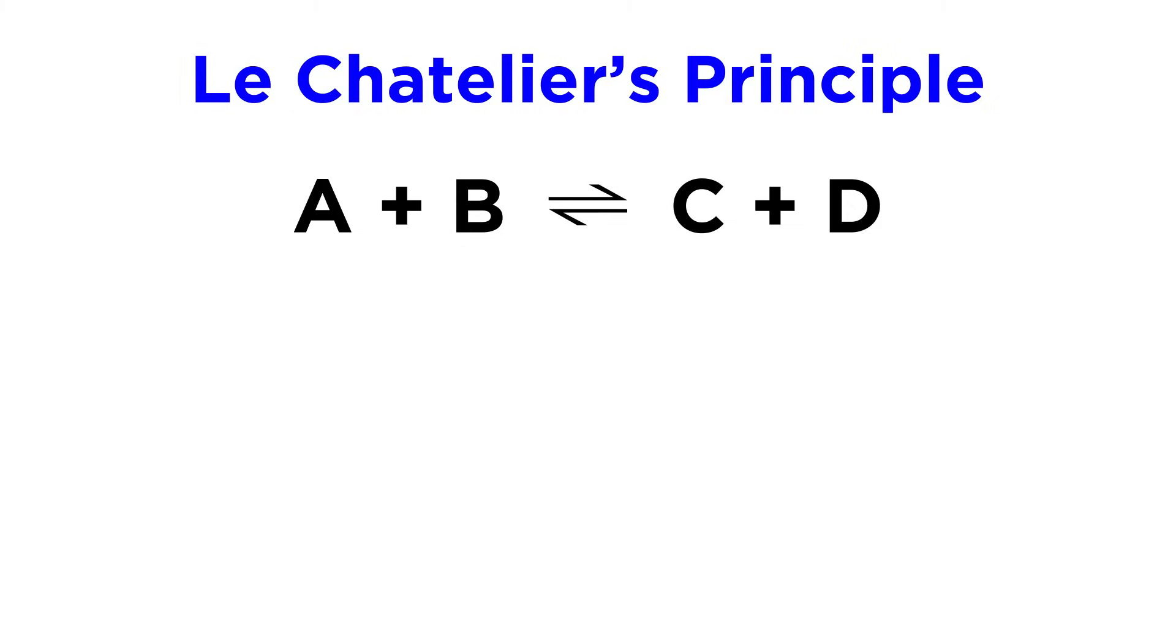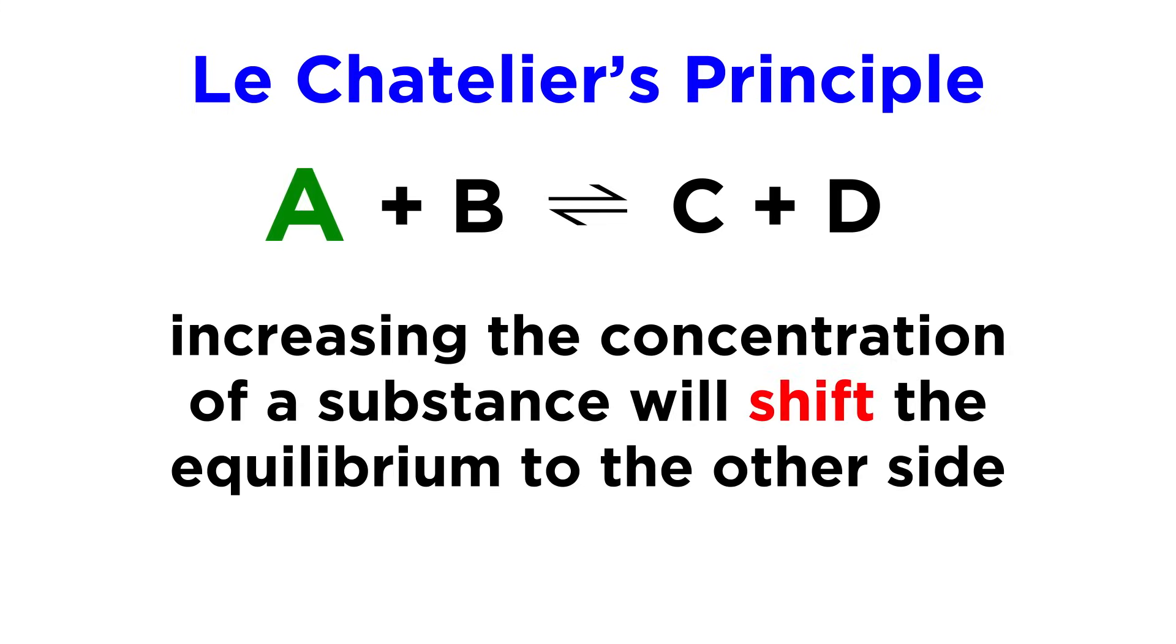Otherwise, we know that under this principle, which describes the behavior of equilibria, if we were to add an additional amount of one of the components in an equilibrium, the equilibrium would shift towards the other side, using up some of that additional component and creating more of the substances on the other side.